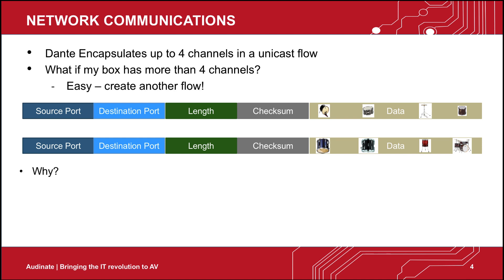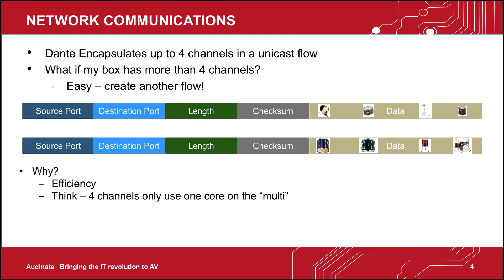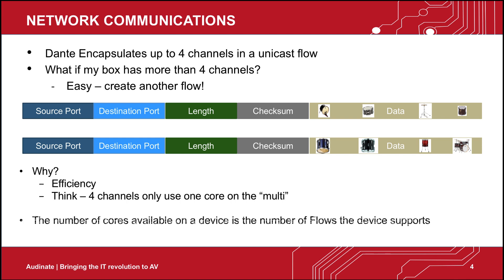Why does Dante do this? The answer is efficiency. In an analog multicore cable, each core is used by 1 channel. But in Dante, 4 channels will use 1 flow, which is similar to 1 core of a multicore cable. The number of cores available on a device is the number of flows the device supports.